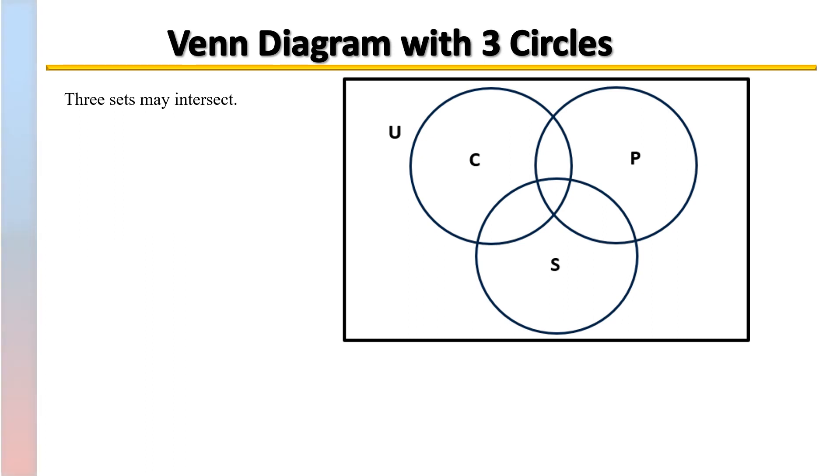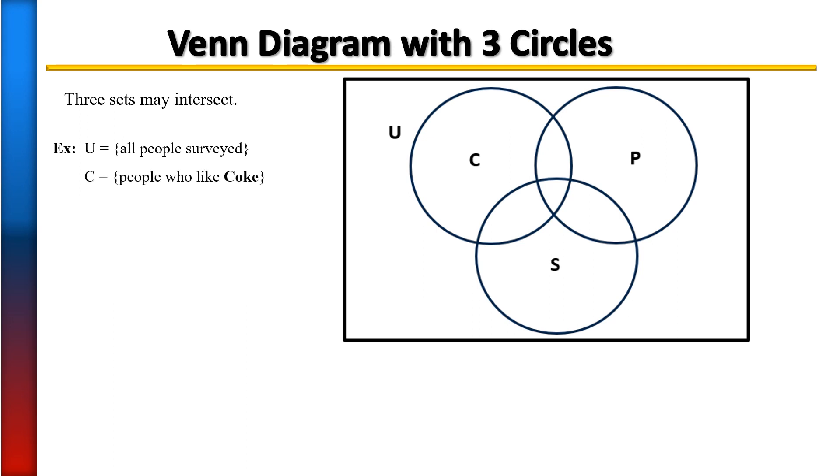Three sets can intersect as shown with the Venn diagram with three circles. To help you better understand the relationship with Venn diagrams with three circles, let U represent the people that were surveyed. Of those people that were surveyed, let C represent those who like Coke, P represent those who like Pepsi, and S represent those who like Sprite.